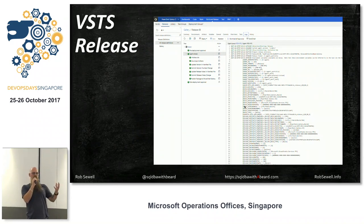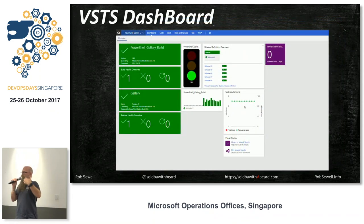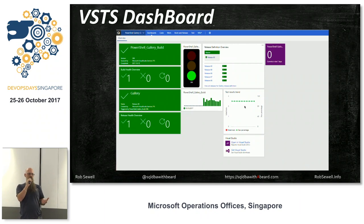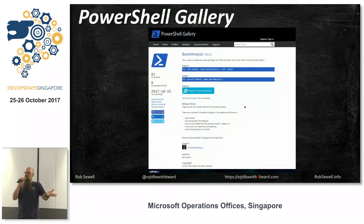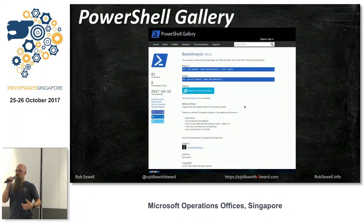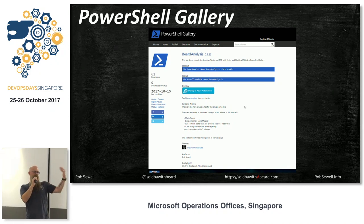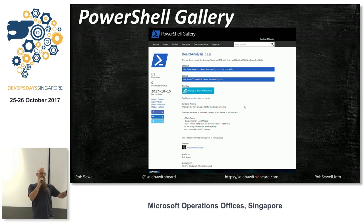Everybody has some input. VSTS enables us to have nice dashboards — pretty green pictures, traffic lights that move up and down when builds are happening, and everybody can see the history and time things have taken. And then, after that's done, it appears in the PowerShell Gallery. Install-Module BeardAnalysis — because that's an important thing to make sure you write PowerShell for. You can see the release notes, and that it was demoed in five minutes at Singapore for that particular version.